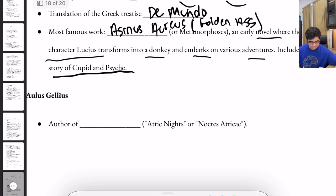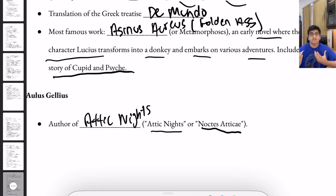Now we move on to Aulus Gellius. Aulus Gellius was the author of the Attic Nights, either called Noctes Atticae or Attic Nights in English. So with that being said, we just finished our whole curriculum on Latin literature.